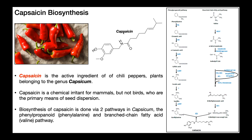Here's the compound capsaicin. You can see its chemical structure, but what is it? Capsaicin is the active ingredient in chili peppers, which are plants that belong to the genus Capsicum. Here's an example of some hot peppers. Capsaicin, along with some other related compounds, is the active ingredient that gives hot peppers their heat — it's what makes them so hot and spicy.